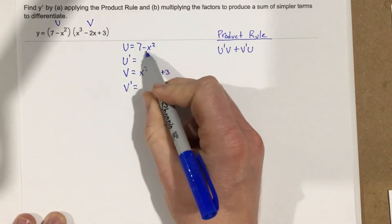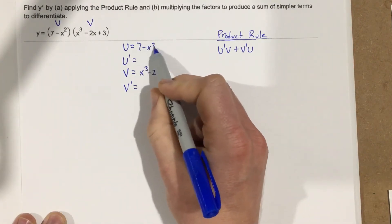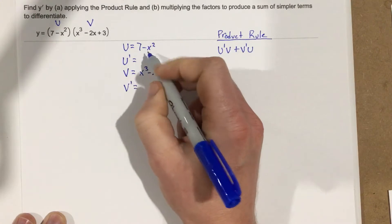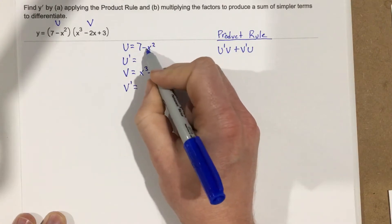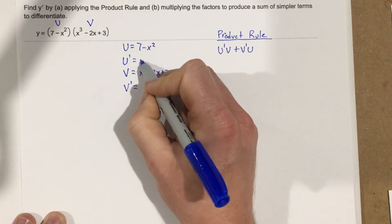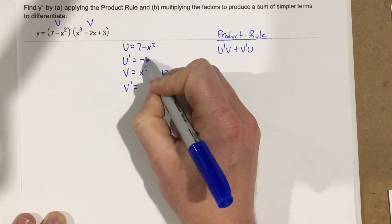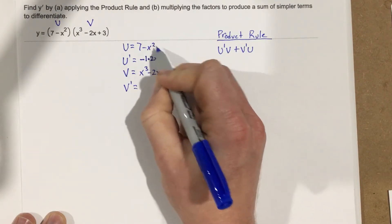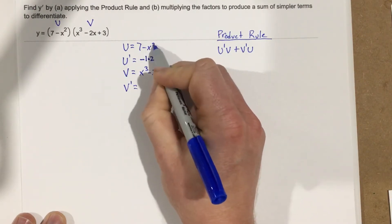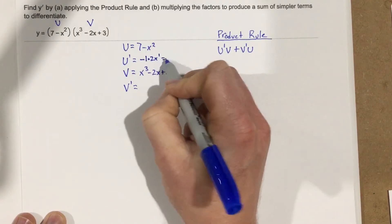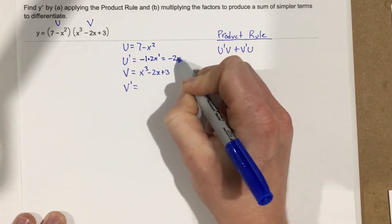Let's take the derivative of 7 minus x squared. The derivative of the constant 7 cancels. For negative x squared, we get negative 1 times 2 times x to the first, which is just negative 2x. So u prime equals negative 2x.